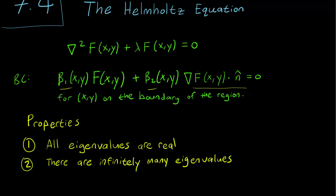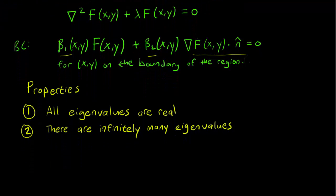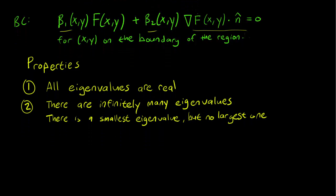Secondly, we know that there are infinitely many eigenvalues. Again, this is a familiar property, the same as in one dimension. And just like in one dimension, we do also have a smallest eigenvalue, and again there is no largest eigenvalue. The eigenvalues are allowed to go off to infinity.